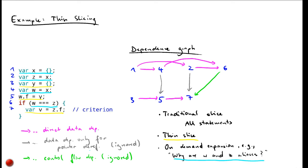You might argue that we are back where we started, since the whole program is included in this expanded thin slice. For this small program that is correct, but in general for more complex programs the thin slice, even after a few expansions, will still be smaller than the traditional static slice obtained from the classical approach seen in the previous video.